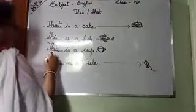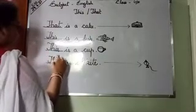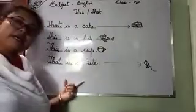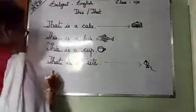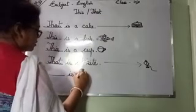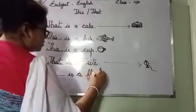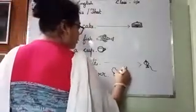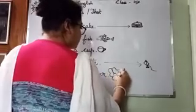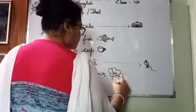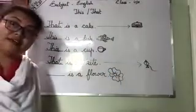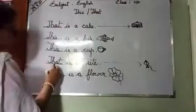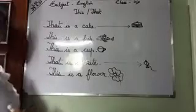That. T-H-A-T — that is a kite. Understand? Next, 'dash is a flower'. See where I am writing or drawing the flower. It is near. The things when they are near, then what will we write? This. T-H-I-S — this. This is a flower.